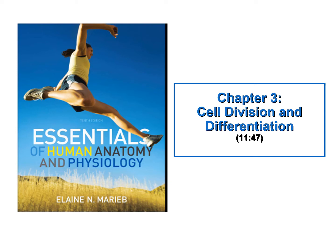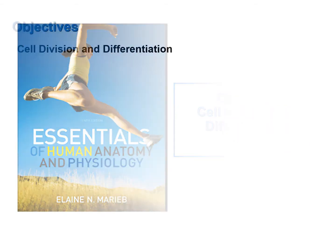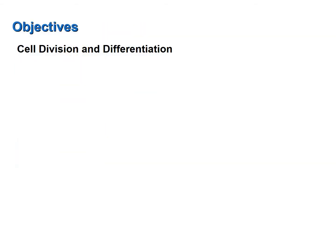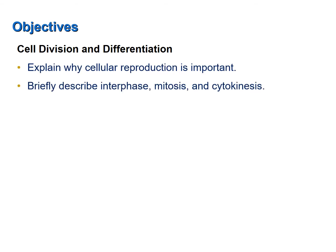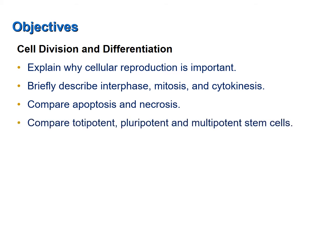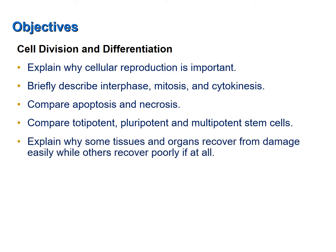Cell division and differentiation are discussed in this screencast, which can be found in Chapter 3 of your textbook. This screencast was designed to help you achieve the following objectives: explain why cellular reproduction is important; briefly describe interphase, mitosis, and cytokinesis; compare apoptosis and necrosis; compare totipotent, pluripotent, and multipotent stem cells; and explain why some tissues and organs recover from damage easily while others recover poorly, if at all.